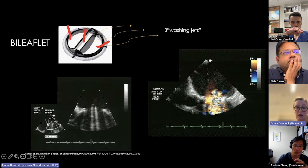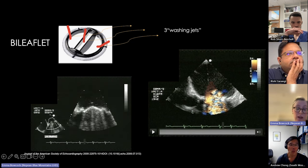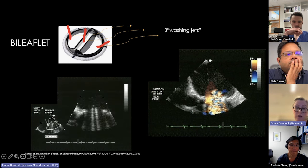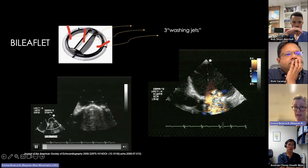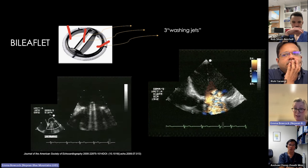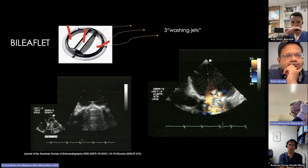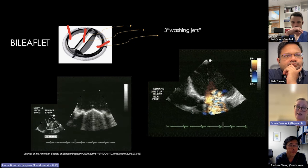A normal bileaflet valve on echo shows the occluders opening at an angle of 75–90 degrees, opening and closing symmetrically, with lovely comet tails coming down from both occluders. This obscures things in the left ventricle but confirms both occluders are opening nicely.